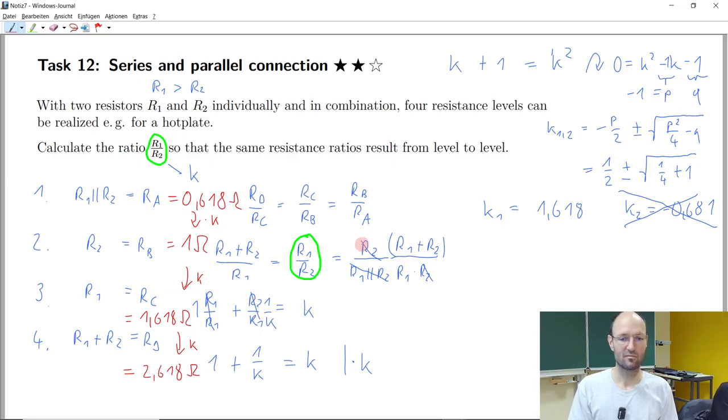And does anyone of you know this number here that we just calculated also has a special name. It's a so-called golden ratio or in German goldener Schnitt.